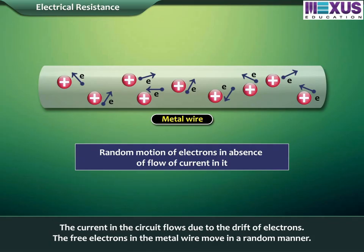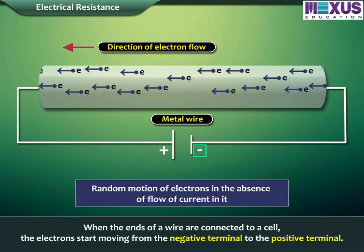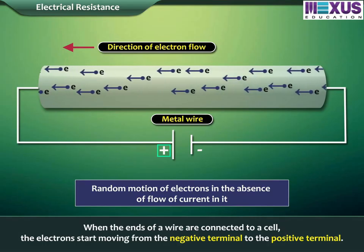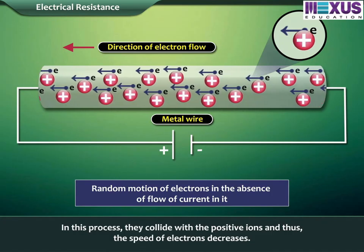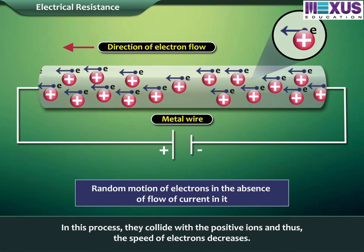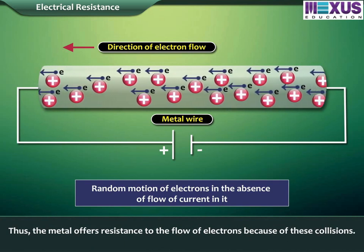The current in the circuit flows due to the drift of electrons. The free electrons in the metal wire move in a random manner. When the ends of a wire are connected to a cell, the electrons start moving from the negative terminal to the positive terminal. In this process, they collide with the positive ions and thus the speed of electrons decreases. Thus, the metal offers resistance to the flow of electrons because of these collisions.